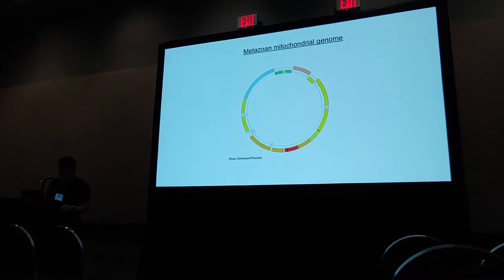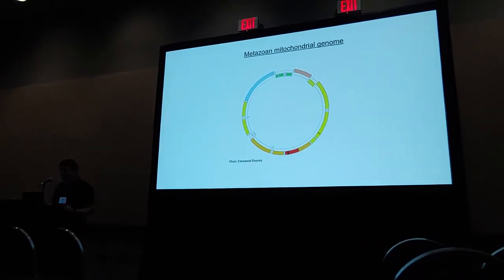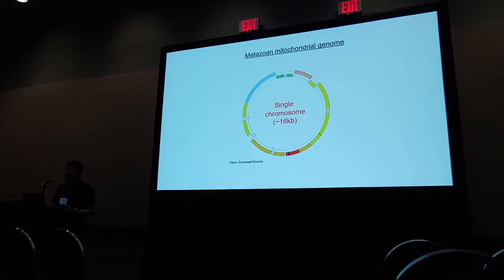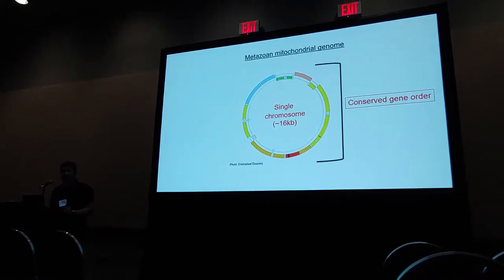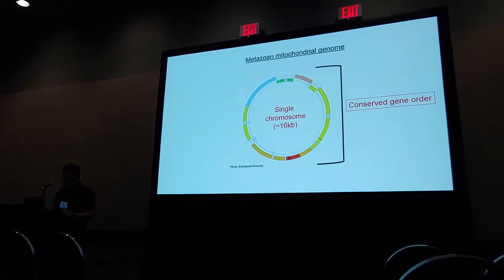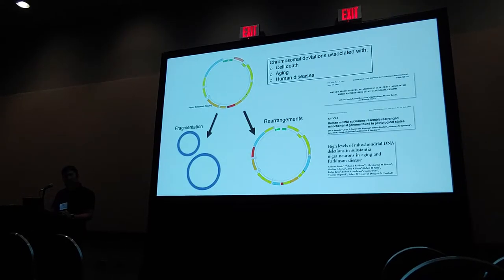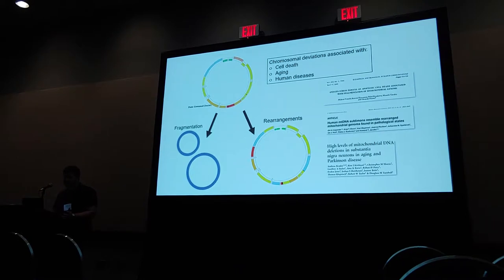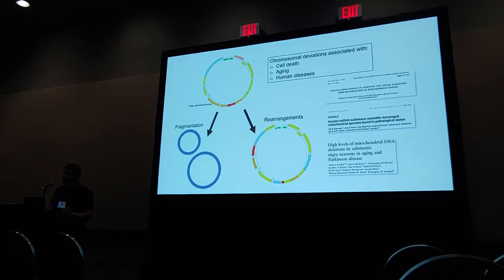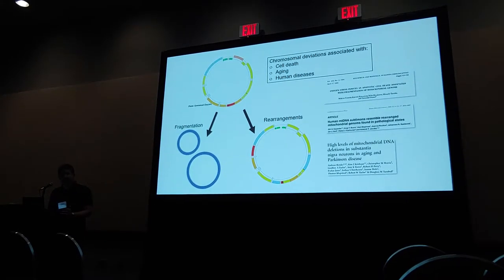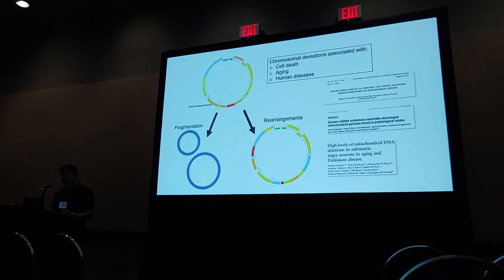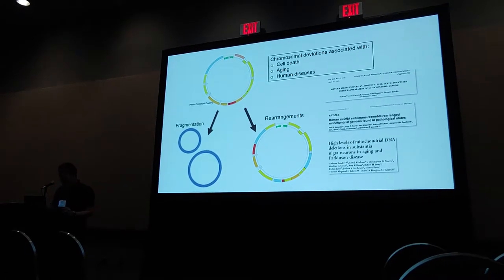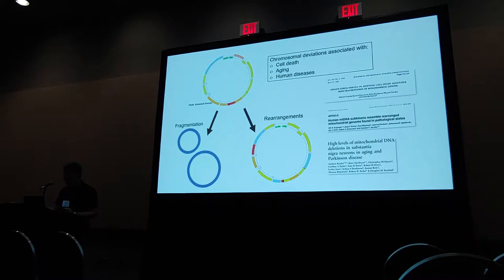The animal or metazoan mitochondrial genome is a highly conserved structure. It's usually a single chromosome that's around 16 kb, and there's usually a fairly conserved gene order within this chromosome as well. When we see deviations from this architecture — either fragmented genomes or gene rearrangements on a single chromosome — this tends to be associated with things like cell death, aging, and in humans various diseases. It's generally not a good thing for the organism.